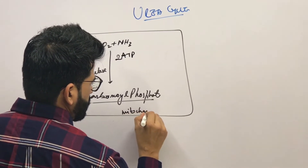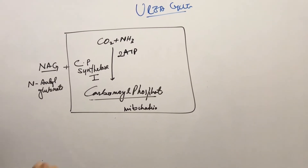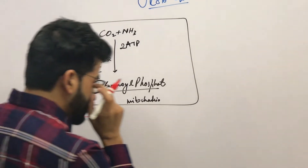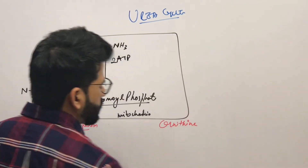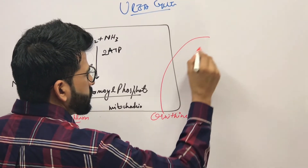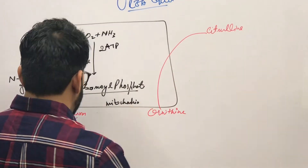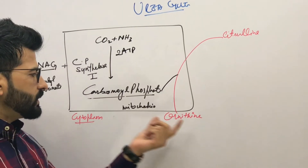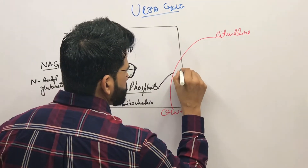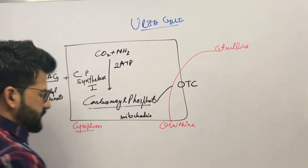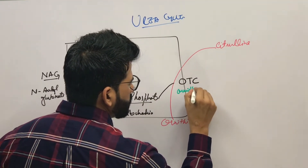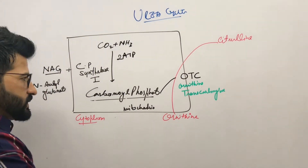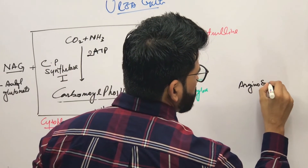This is happening in the mitochondria of the liver. Now in the cytoplasm, ornithine combines with carbamoyl phosphate to become citrulline. The enzyme responsible is ornithine transcarbamoylase, abbreviated OTC.